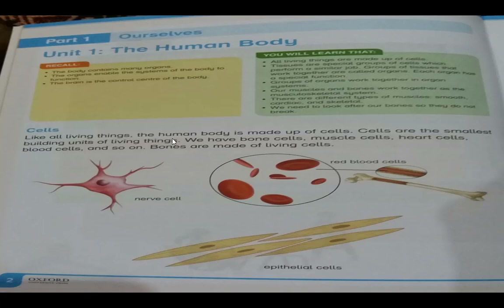We start with cells — the first building unit of the human body. All living things are made up of cells, and like all living things, the human body is also made up of cells. Cells are the smallest building units of living things. Our body has different cells such as bone cells, muscle cells, heart cells, and blood cells.